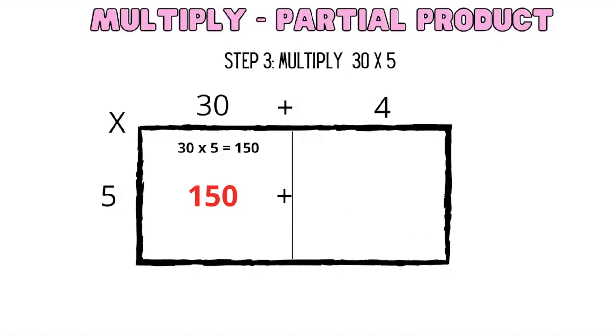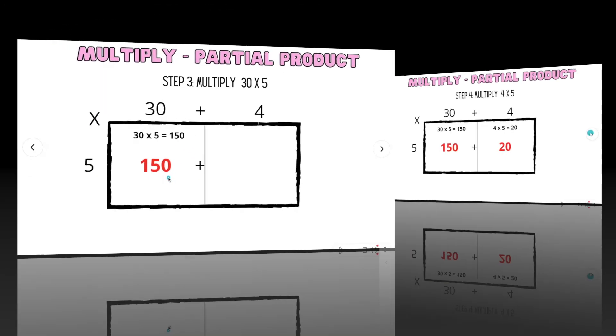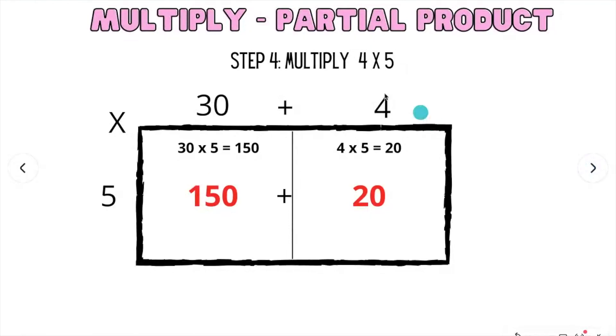Now we're going to multiply 30 times 5. 30 times 5 is 150. Next, we're going to multiply 4 times 5. 4 times 5 is 20. Then we're going to add 150 plus 20. And it gives us the same answer, which is 170.